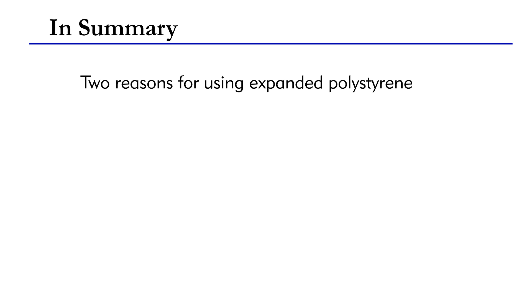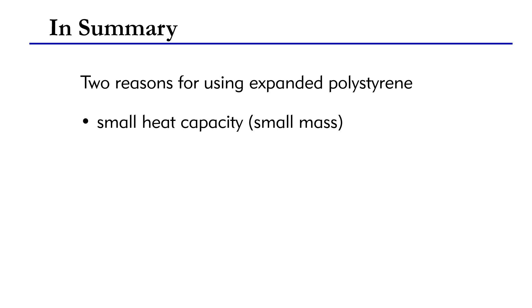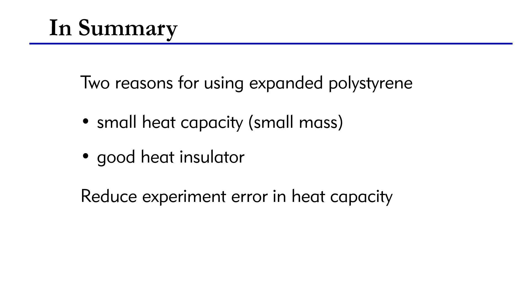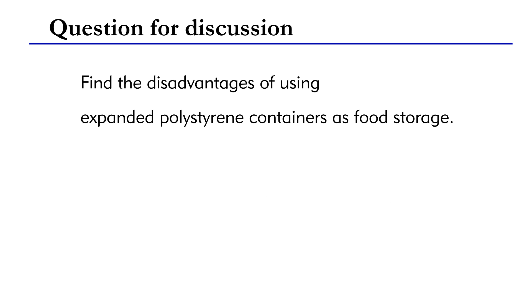In summary, this video provides two reasons to explain why polystyrene cups are used in finding heat capacity. It has a very small heat capacity due to its small mass, and it is also a good insulator. These two properties of expanded polystyrene help us to reduce experimental errors in finding heat capacity. Before we end, I would like you to find out the disadvantages of using expanded polystyrene containers as food storage — be the first to write your answer in the comments below. I hope this video can help you understand more about the experiment of measuring heat capacity of a liquid. Thank you for watching.